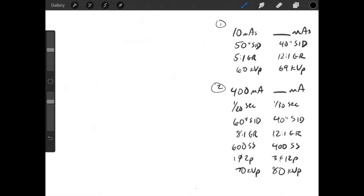So what they're saying is for exposure one on the left here, this series of technical factors was used: 10 mAs, 50 inch SID, 5 to 1 grid, and 60 kVp. What they're asking for the second set of exposure values is what mAs would be required if you changed your SID to 40 inches, 12 to 1 grid ratio used, and then you up your kV to 69.